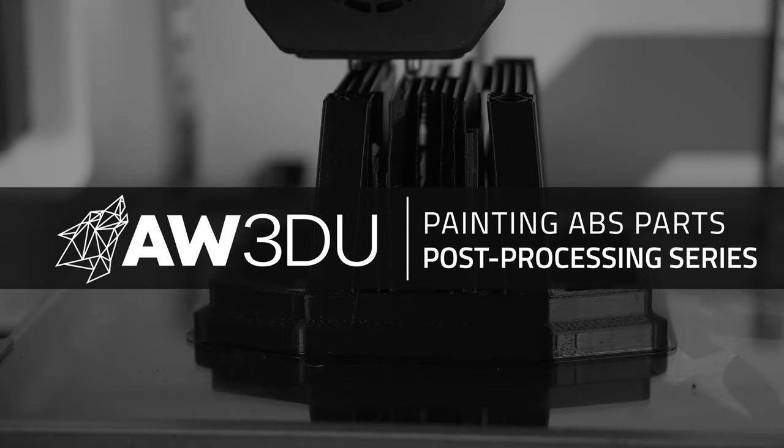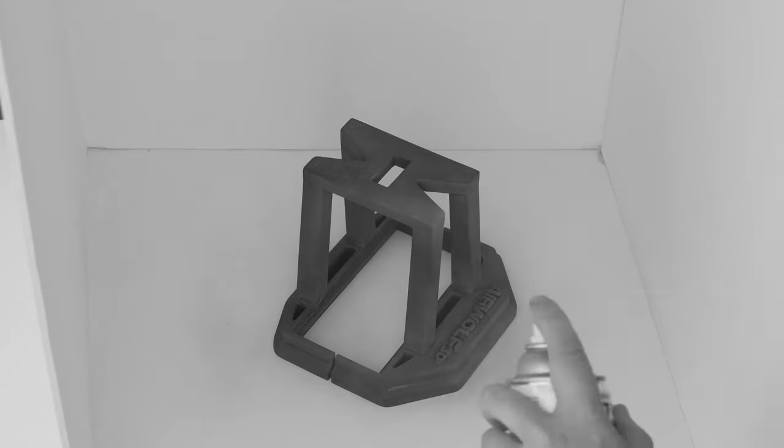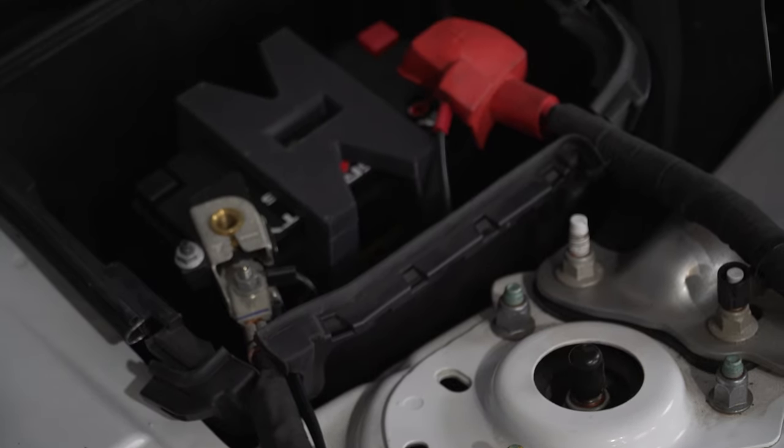In this lesson, we will go over how to post-process an ABS part using traditional sanding and painting techniques. We will be finishing the Ford Mustang Lithium Battery Holder in order to make it look great under the hood of the car.